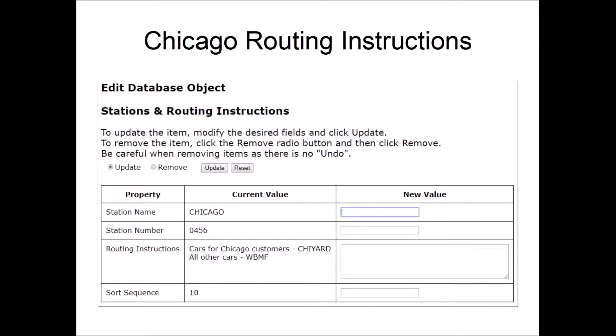Here you can see the routing instructions for the Chicago Yard. It says that there are any cars in the yard for Chicago customers, those are handled by the Chicago Yard job. Any other cars in the yard, they must be westbound because all the other cars would be destined for Chicago customers. So all the other cars in the yard are going to be handled by the westbound manifest freight.